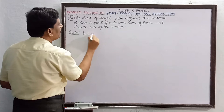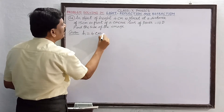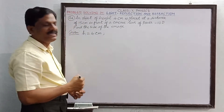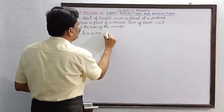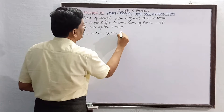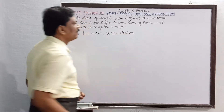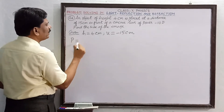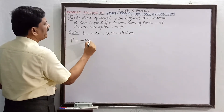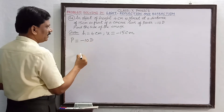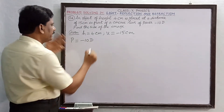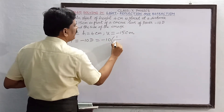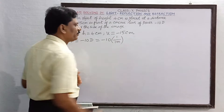The given quantities: height of the object h is equal to 4 centimeters. Object distance u is equal to minus 15 centimeters, since it is placed in front of the lens. Power P is equal to minus 10 diopter. Now, 1 diopter is equal to 1 divided by 1 meter.